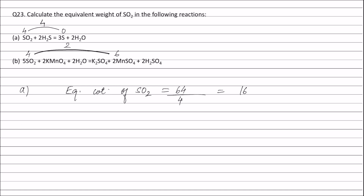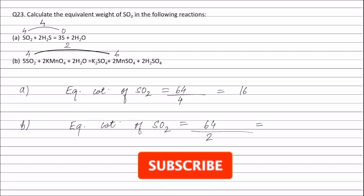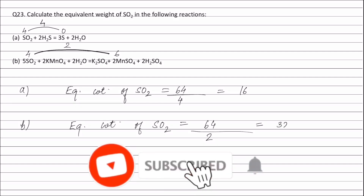Therefore, for equation B, the equivalent weight of sulfur dioxide is equal to the molecular weight of sulfur dioxide — that is 64 — divided by the valency factor of sulfur dioxide, that is 2, and this is equal to 32.